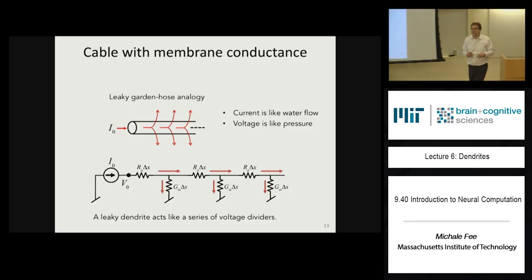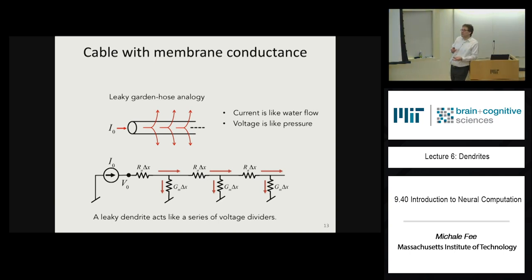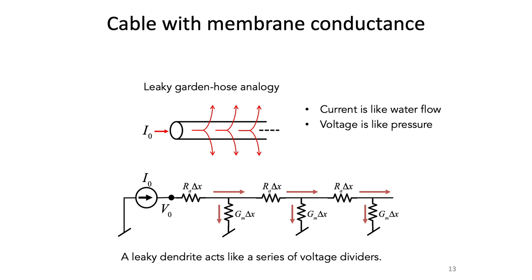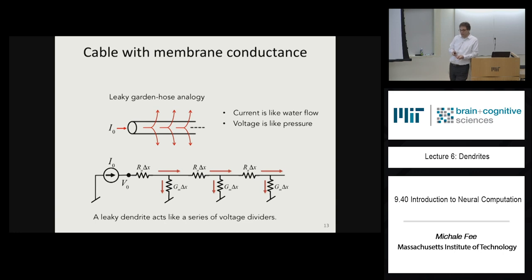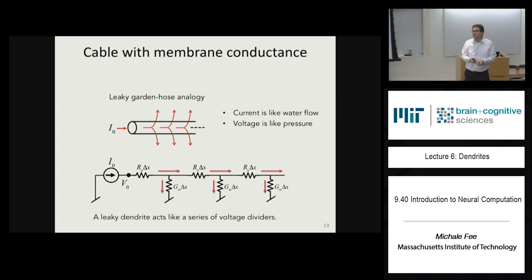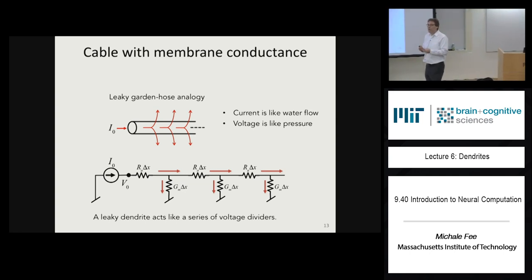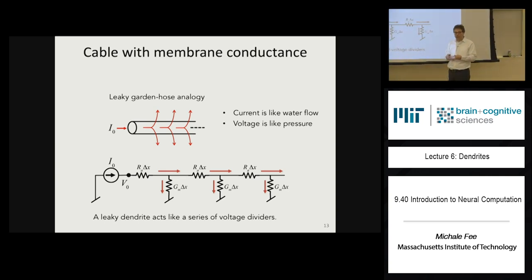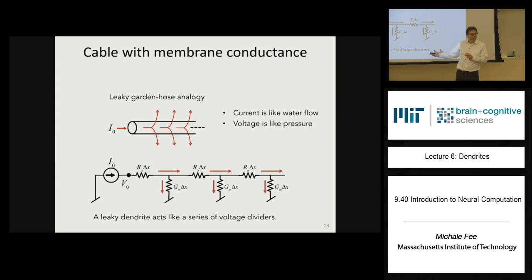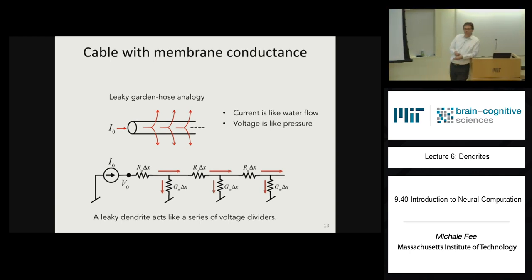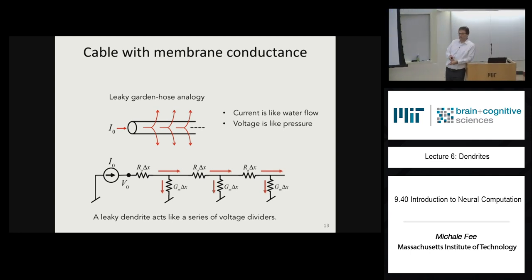Now we're going to derive the general solution to the voltage in a piece of dendrite for the case where we have membrane capacitance and membrane currents. We're going to derive what's called the cable equation — the most general mathematical description for the voltage in a cylindrical tube like a dendrite. I want you to see what it looks like and where it comes from, though I don't expect you to reproduce the derivation.